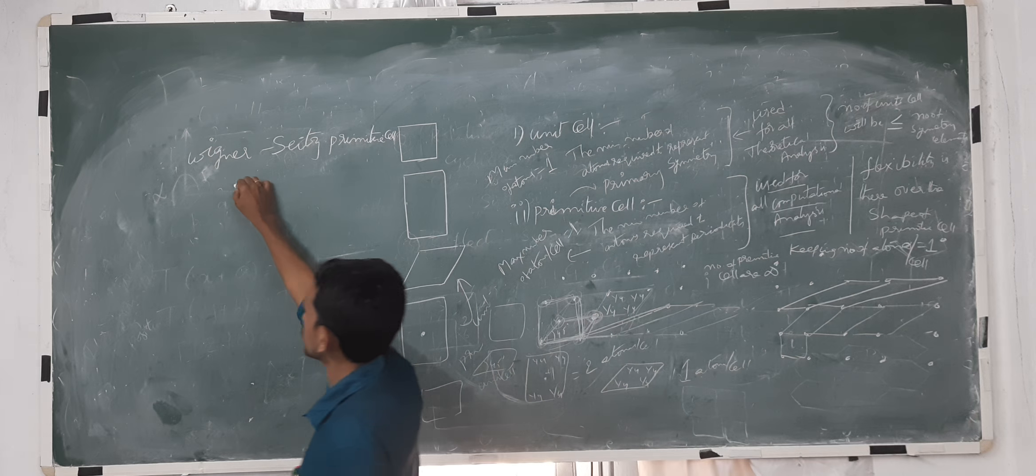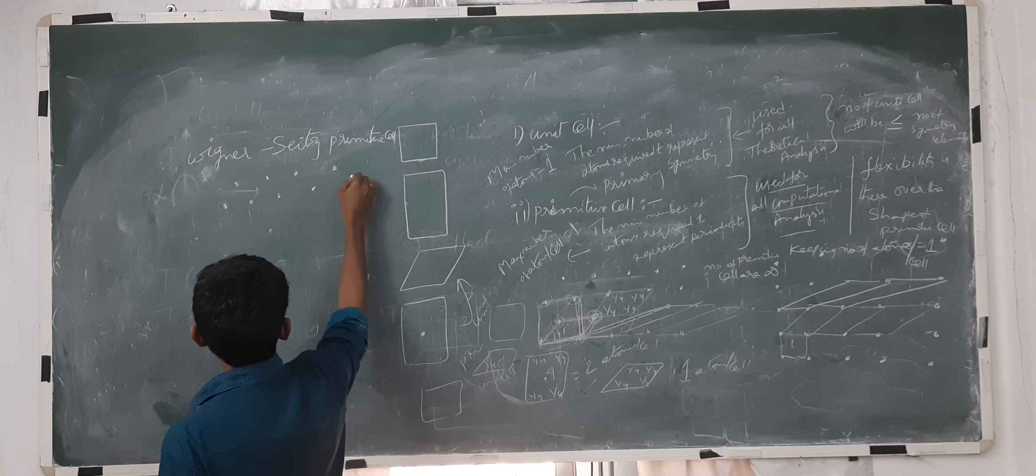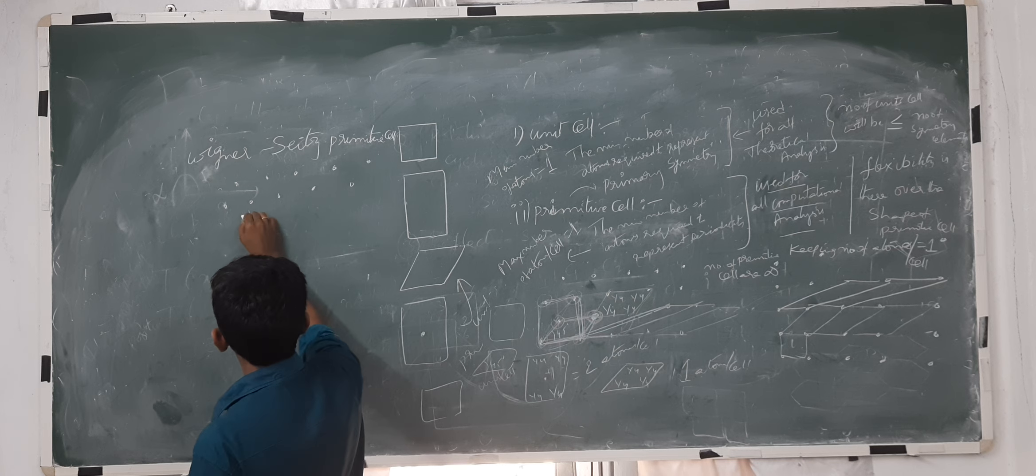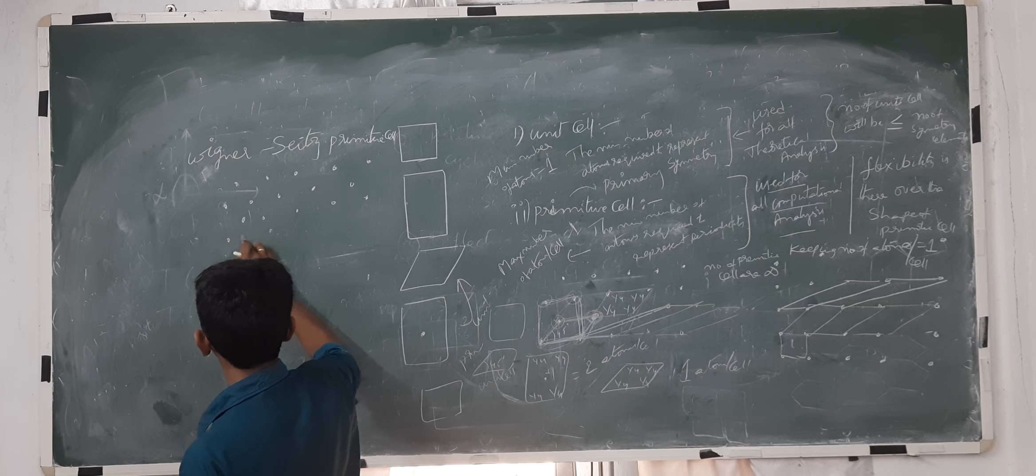We have a set of lattice points like that. How to construct a unit cell out of it? The definition, or the procedure, was given by Wigner and Seitz.